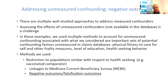Which methods did we use in these studies? A number of them: restrictions, the simplest one of all; using a vaccinated comparator—somebody vaccinated with another comparable vaccine to the one we are testing; linkages to the Medicare Current Beneficiary Survey, a survey that Medicare performs in a representative sample of beneficiaries every year; and negative outcomes, which we sometimes call falsification outcomes. In this study of herpes zoster vaccine effectiveness, we used two methods to account for unmeasured confounding.